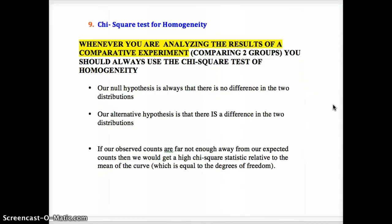If you have one set of data and one claim, you're using a goodness of fit test for chi-square. If you have two sets of data comparing two groups or a treatment and a placebo group, then you're going to use the test for homogeneity.